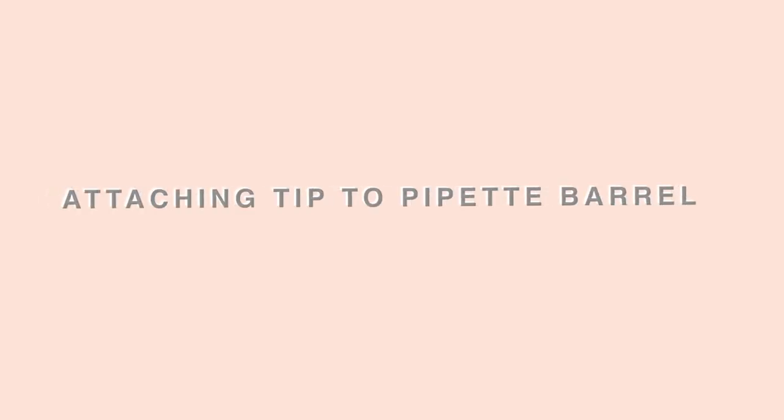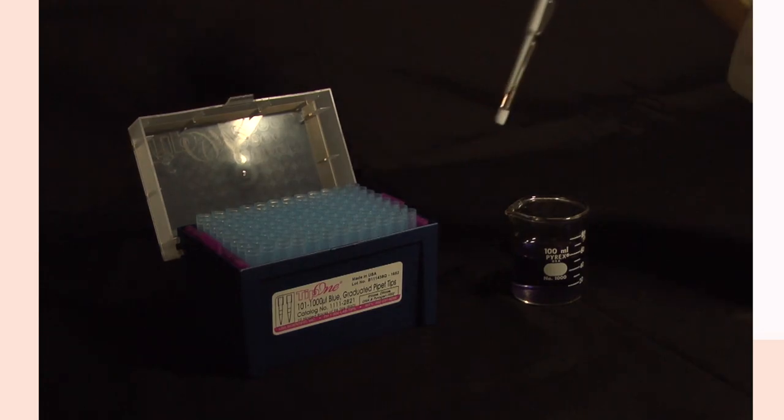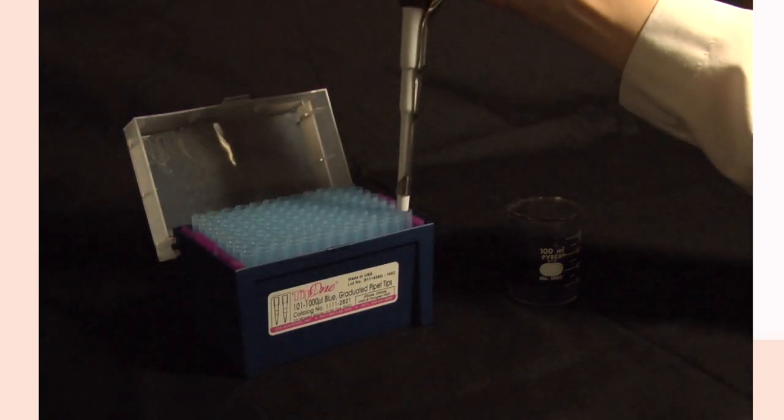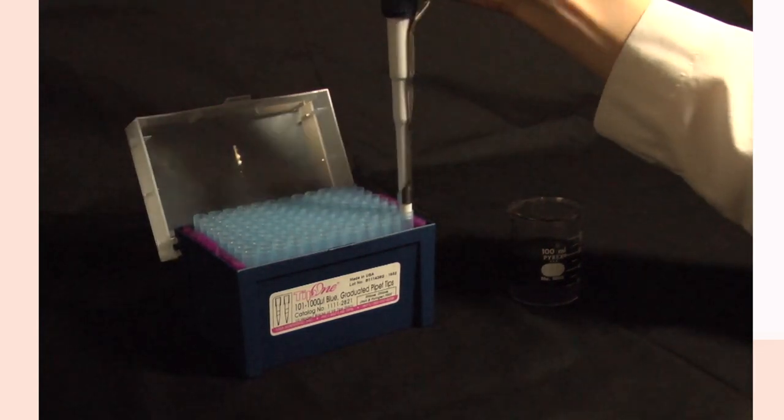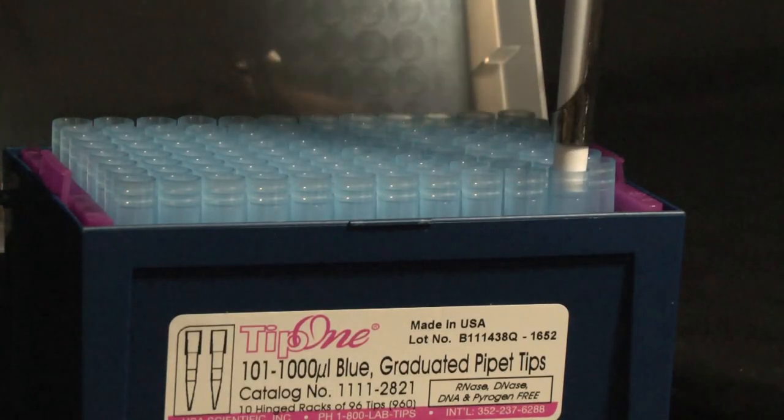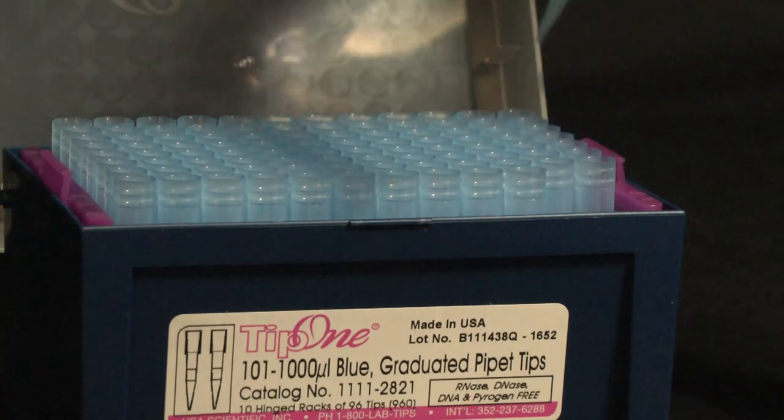In order to attach the tip to the pipette barrel, press the pipetter firmly into the top of the tip. You will not need to fasten it by hand. Press enough that the tip is attached, but avoid using too much force that would break the barrel.